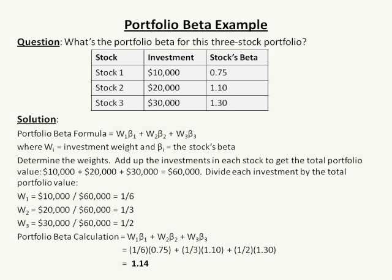It's $10,000 plus $20,000 plus $30,000 — this is a $60,000 portfolio. Divide each investment by the total portfolio value to determine the weights. The weight in Stock 1 is $10,000 divided by $60,000, or one-sixth. The weight in Stock 2 is $20,000 divided by $60,000, or one-third. The weight of Stock 3 is one-half, at $30,000 divided by $60,000. Plugging these numbers into the formula, you should end up with a Portfolio Beta of 1.14 — which is a little higher than the overall stock market's Beta of 1.